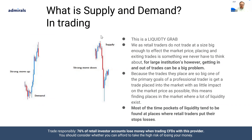What very often happens when we see these big candles — and sometimes we understand it — it's all to do with liquidity. As retail traders, we don't trade at a size big enough to affect the market price, so placing individual trades is not something we need to think about as intensely as a large institutional trader. For large institutional traders, getting in and out of trades can be a big problem because they're trying to put on a really big position. One of the primary goals of a professional trader is to get a trade placed into the market with as little impact on the market price as possible, and that means finding places where there's a lot of liquidity.